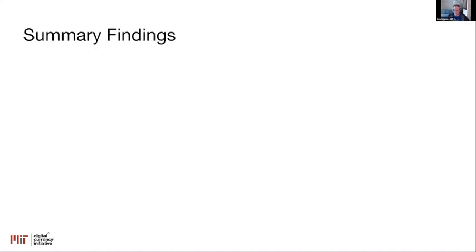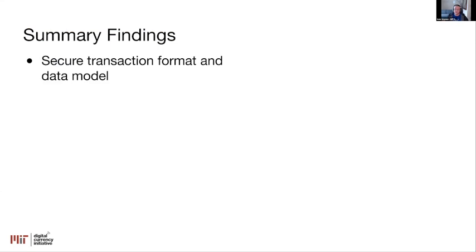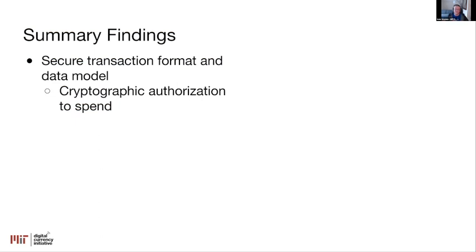Let's talk about the findings that we actually released. First, we were able to create a secure transaction format and data model — every transaction has truly cryptographic authorization to spend. Once you as the transaction processor see a transaction come in, you know it could only have been built by someone who has the required private keys to spend those funds. Second, we dramatically minimize data retention. The monetary supply takes the form of just a set of opaque tokens. There's really no data stored beyond that — we don't store the values associated with each input or output, we don't store the transaction graph, so we don't store who sent how much to whom and when. That is not recorded by the system. We kept it as minimal as possible.